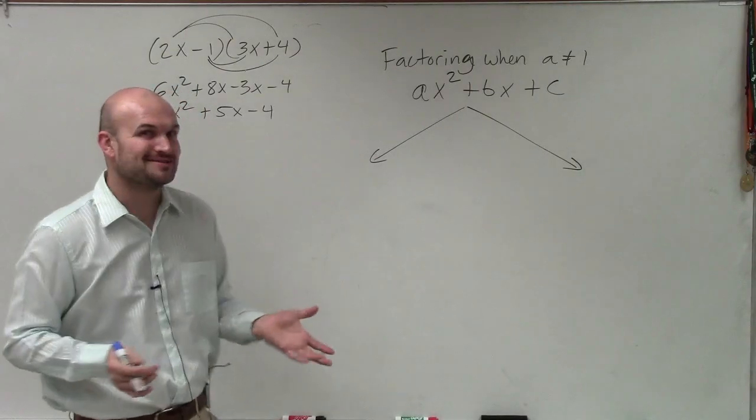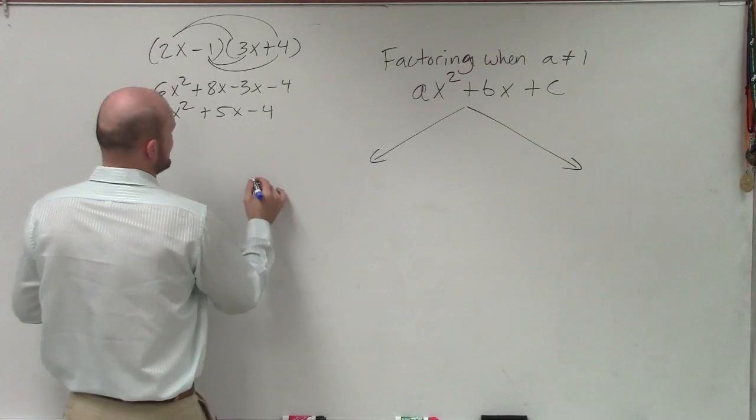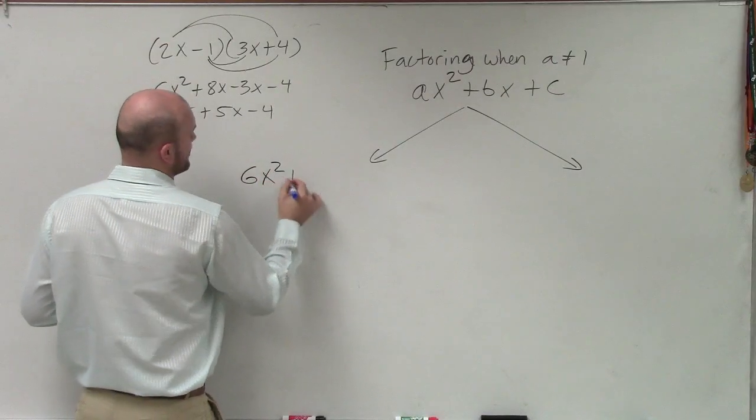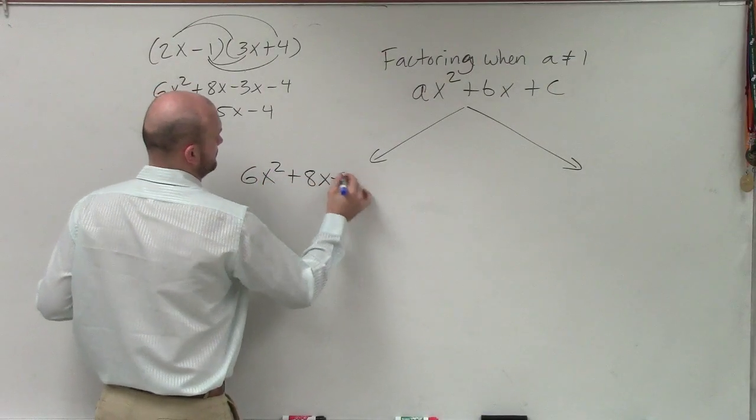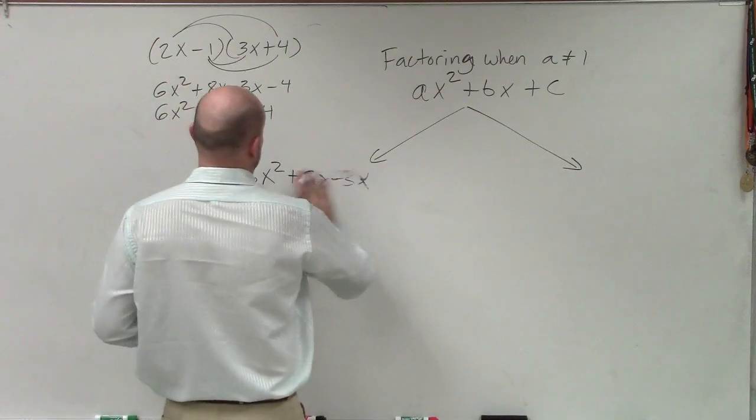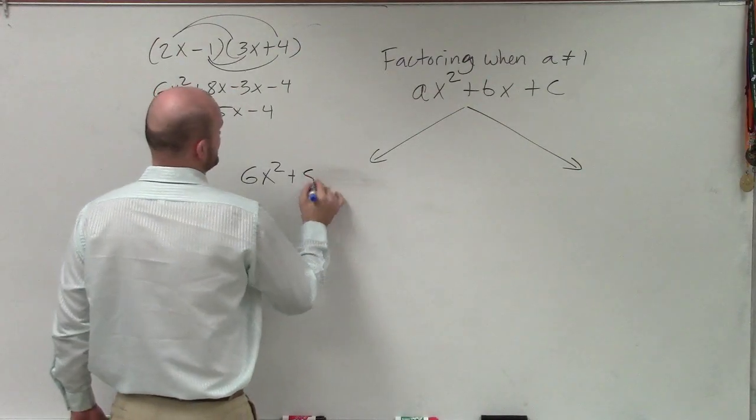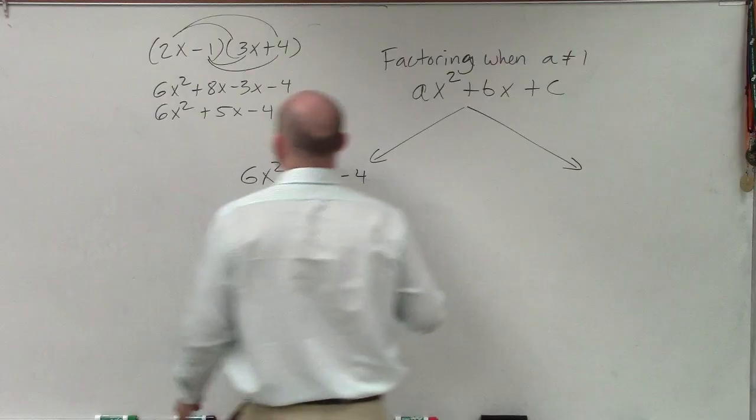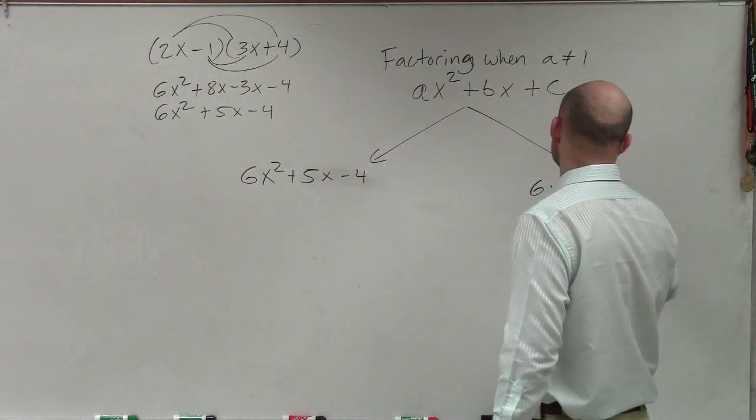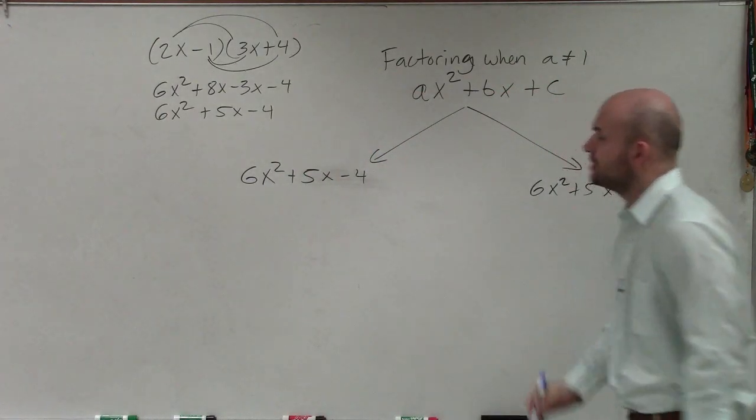You might say, well, we already know the answer. I know, but I'm trying to show you the process. So let's go and take a look at the slow way, first of all. Let's show you the slow way first, and then I'll show you the quicker way. 6x squared plus 5x minus 4.